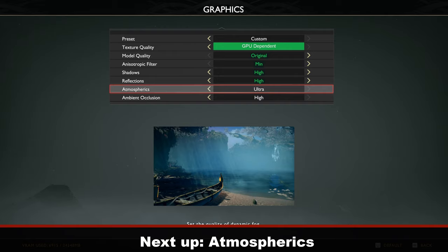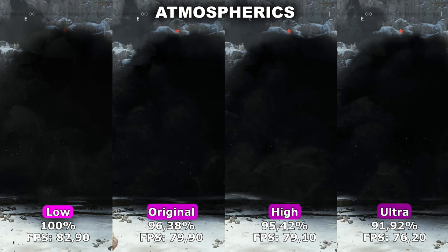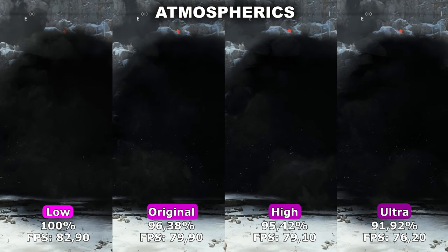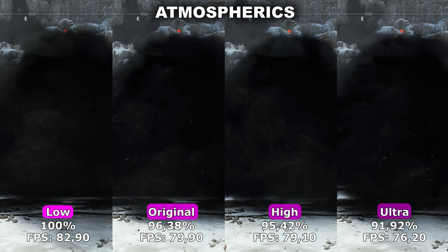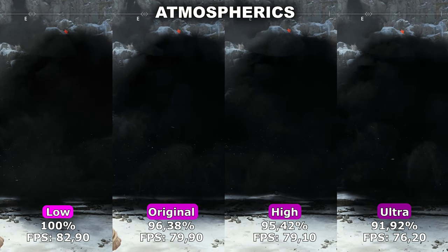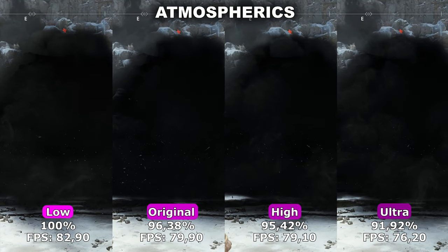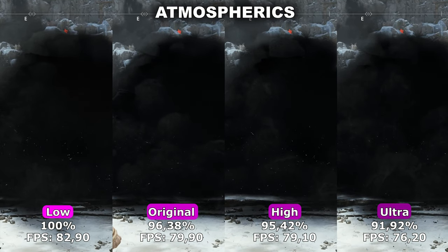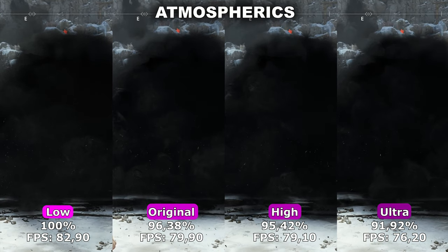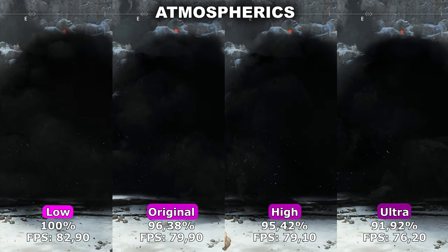Next up, we have Atmospheric. Atmospheric controls the quality of the different fog elements inside the game. In my example, we're standing in front of a large black fog to notice differences between our four options. We have up to an 8% performance difference between low and ultra, however in terms of actual fog quality, it's very difficult to notice any difference between these four options.